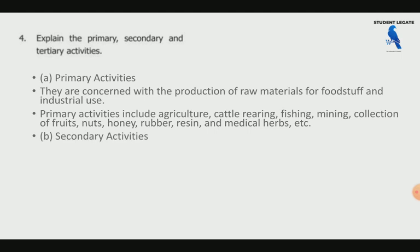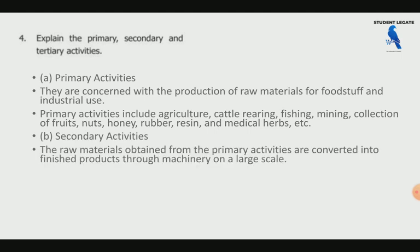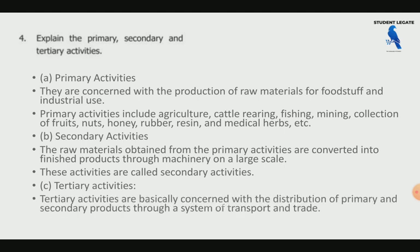Secondary activities involve raw materials obtained from primary activities being converted into finished products through machinery on a large scale. For example, tomatoes are a raw material which can be processed into ketchup as a secondary product. Tertiary activities support primary and secondary products through a system of transport and trade. Examples of tertiary activities are banking, trade, and communication.